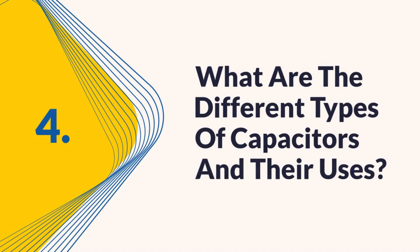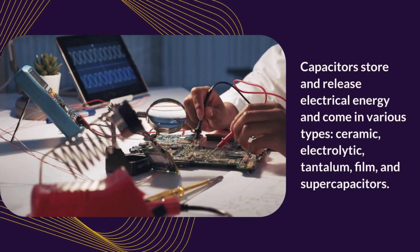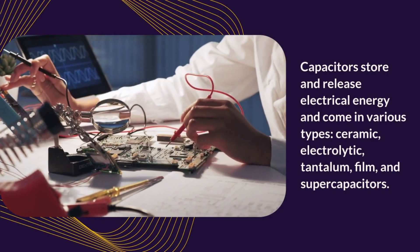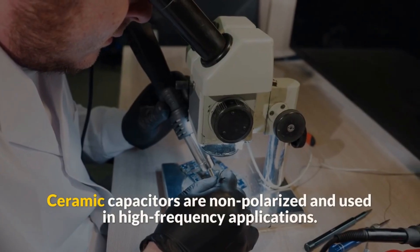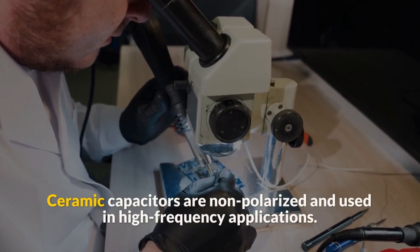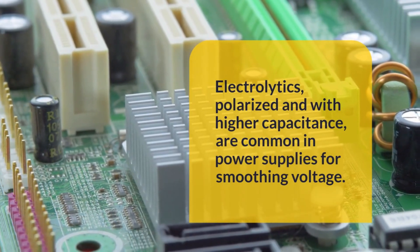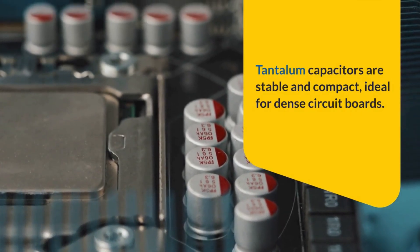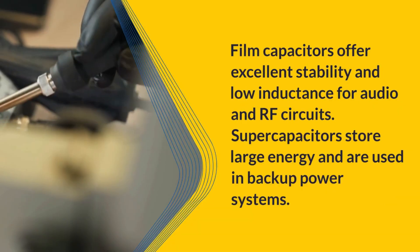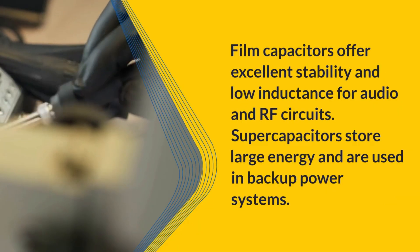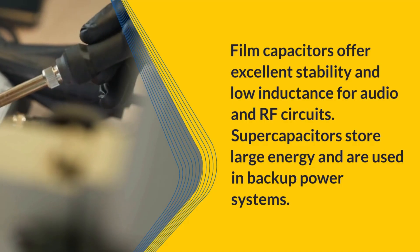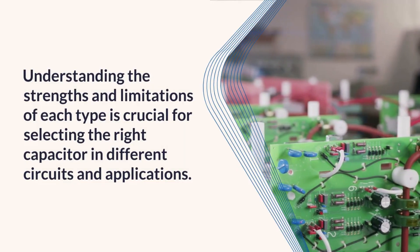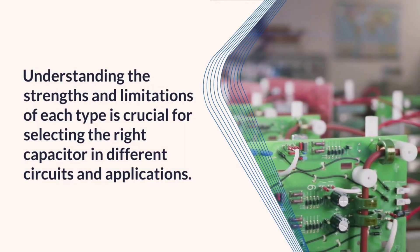Question 4: What are the different types of capacitors and their uses? Capacitors store and release electrical energy and come in various types: ceramic, electrolytic, tantalum, film, and supercapacitors. Ceramic capacitors are non-polarized and used in high-frequency applications. Electrolytics, polarized and with higher capacitance, are common in power supplies for smoothing voltage. Tantalum capacitors are stable and compact, ideal for dense circuit boards. Film capacitors offer excellent stability and low inductance for audio and RF circuits. Supercapacitors store large energy and are used in backup power systems. Understanding the strengths and limitations of each type is crucial for selecting the right capacitor in different circuits and applications.